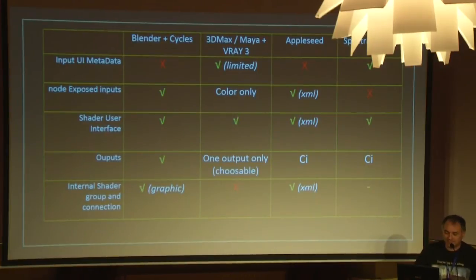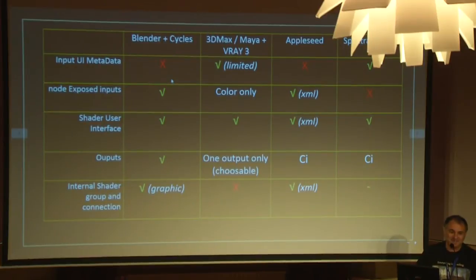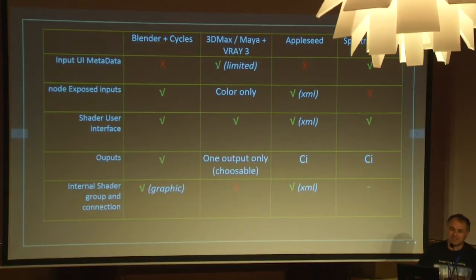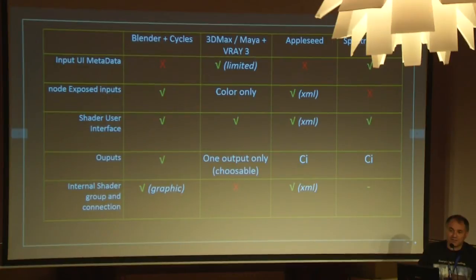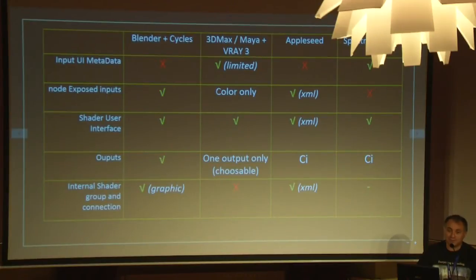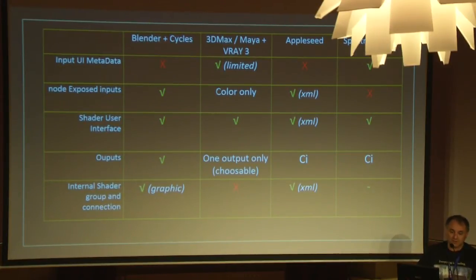On another spreadsheet: the metadata — the famous metadata you ask every year at Blender Conference — are available only in Spectral Studio and in a very, very limited version in V-Ray. In V-Ray, the only thing you can do with metadata is to have a checkmark — yes or no. In V-Ray you have just color input. If you want a vector input, a floating point input, a parameter input, you can't have it. It's very, very limited.